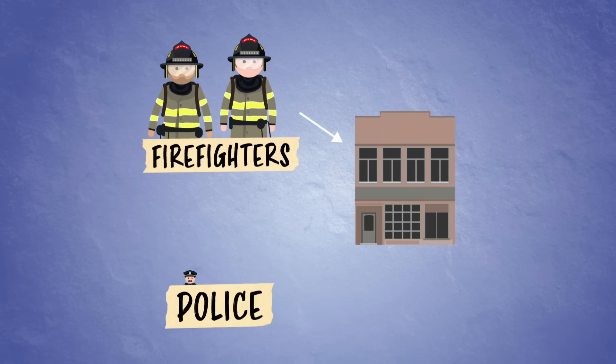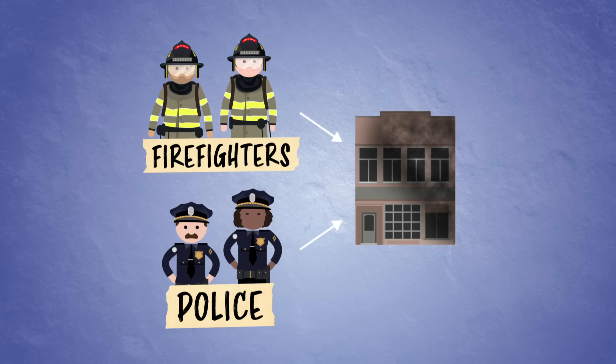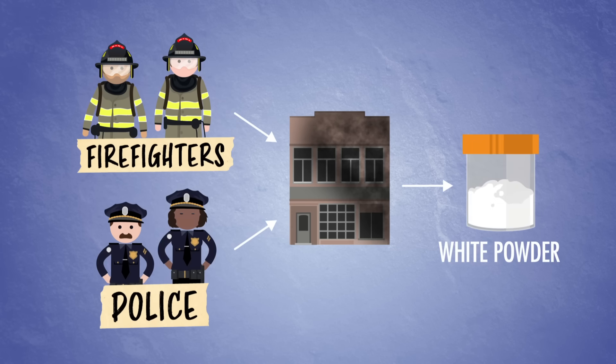Firefighters and police are called to an explosion in a building. After the fire is contained, evidence is collected. Among lots of samples, investigators find what looks like chemistry lab equipment and some white powder in part of the building not affected by the explosion or the firefighting chemicals. Now let's step into the shoes of the crime scene techs. A sample of white powder has been delivered to us, and it's our job to identify it.